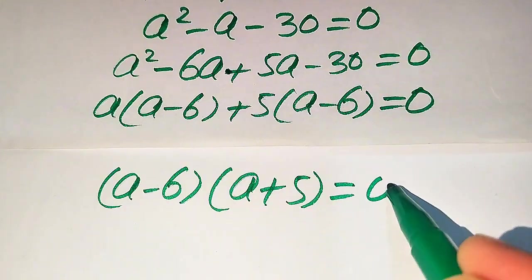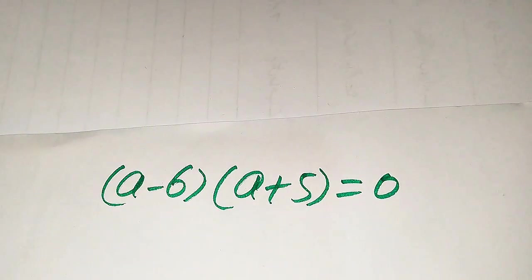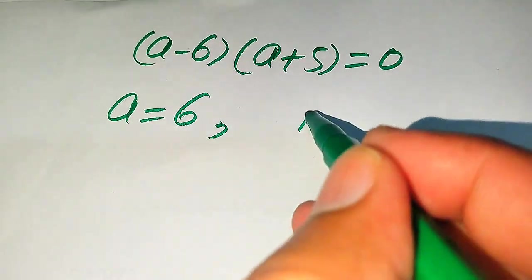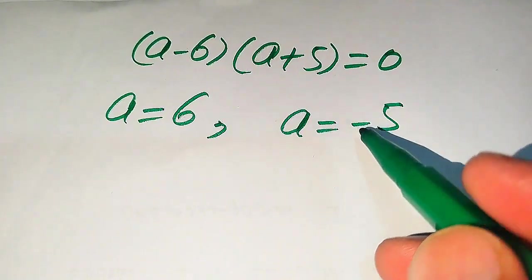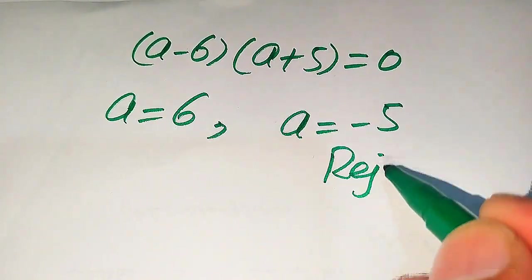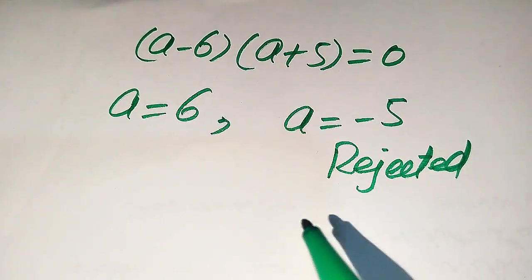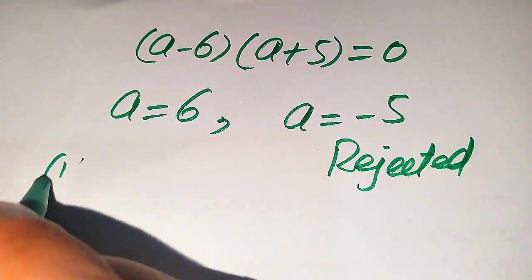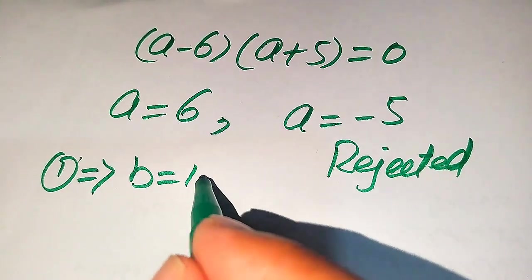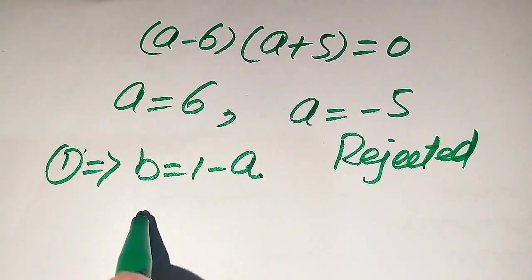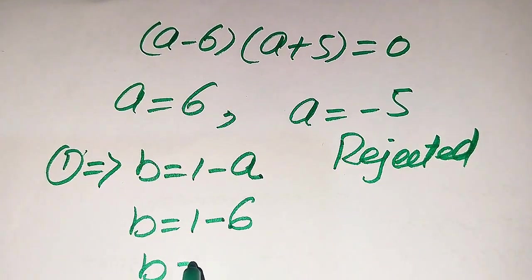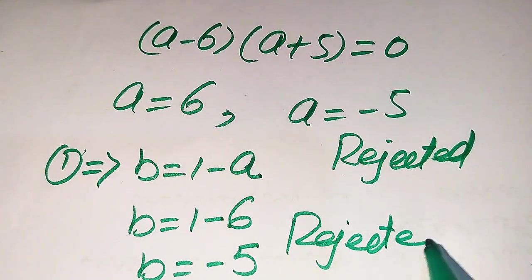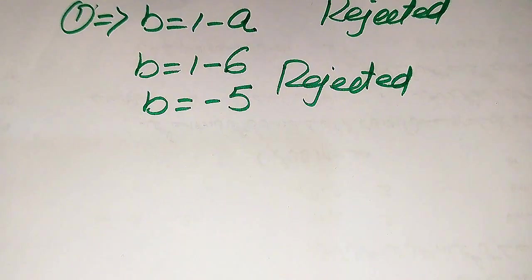So the two cases give a equals 6 or a equals minus 5. Since a equals minus 5 is negative, we reject it. Substituting a equals 6 into equation 1 gives b equals 1 minus 6 equals minus 5, which is also negative. So we reject this case as well — Case 1 yields no positive integer solution.